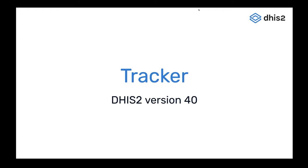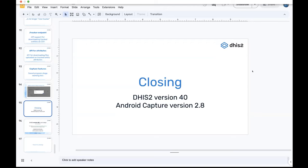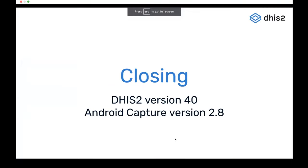Thanks, Marcus. Really great functionality coming to Tracker as well in version 40. We're really excited to see that. As you can see, there are a lot of things that cross over between the different product streams. This saved working lists functionality is in Tracker for web, but it's also in the Android Capture application. And a lot of the extensibility functionality, such as the routes API, the event hooks, have impact on use cases in Tracker as well. Really looking forward to seeing more cross-cutting features and cross-collaboration between the different product streams to make DHS2 as a whole product really shine.